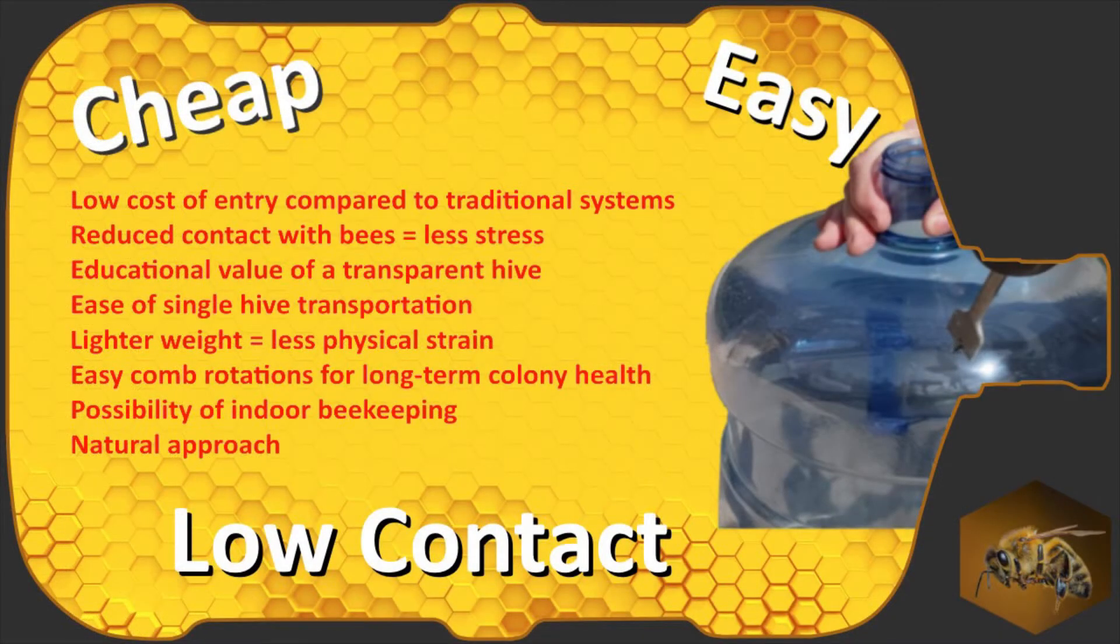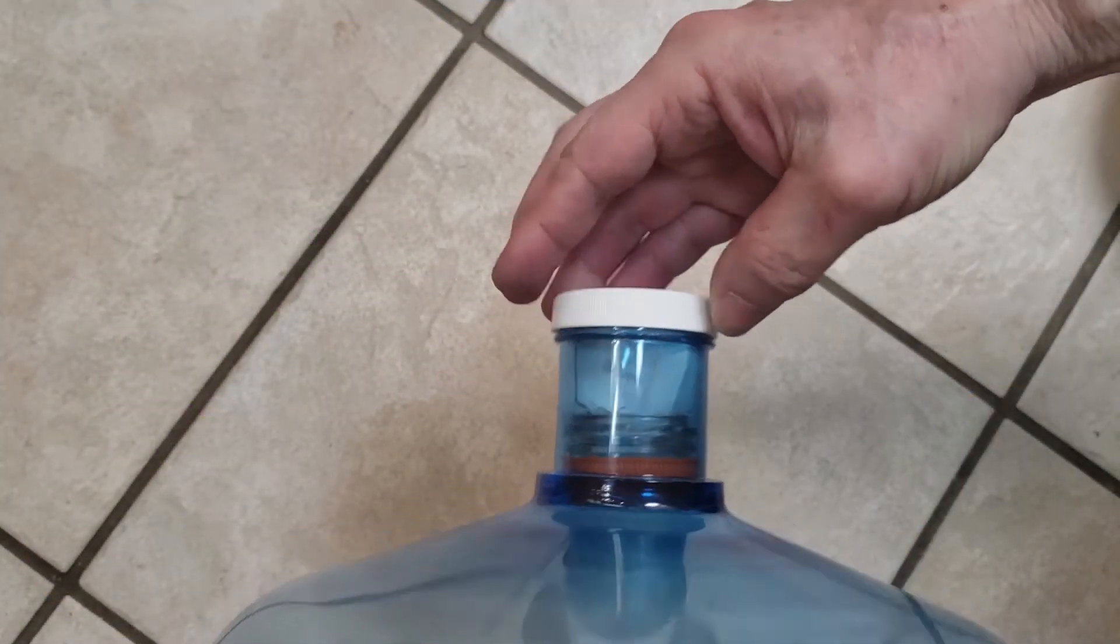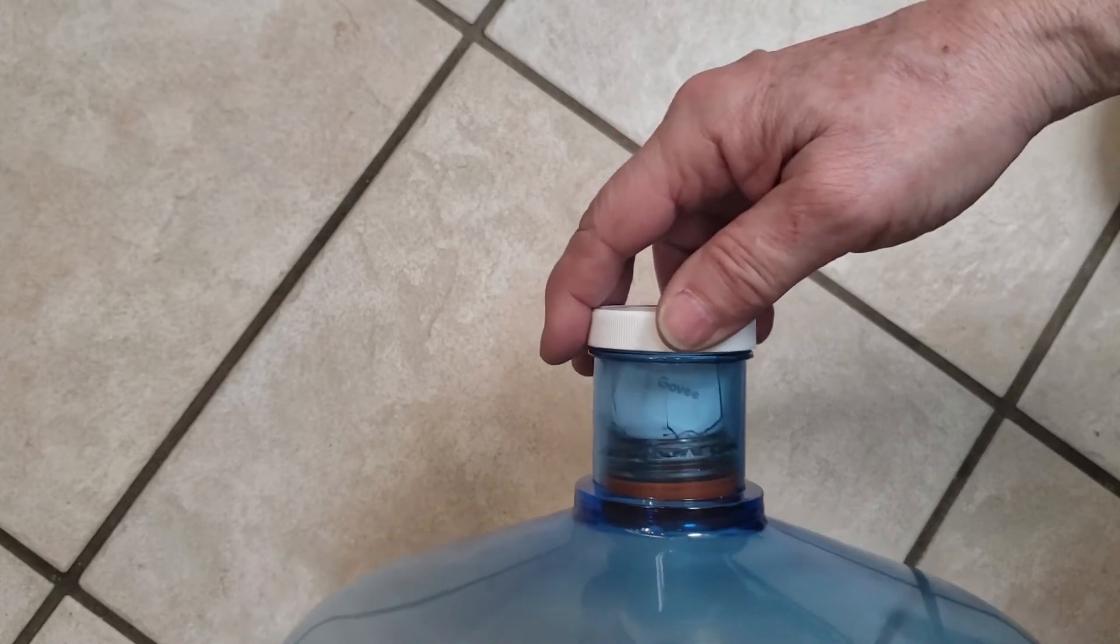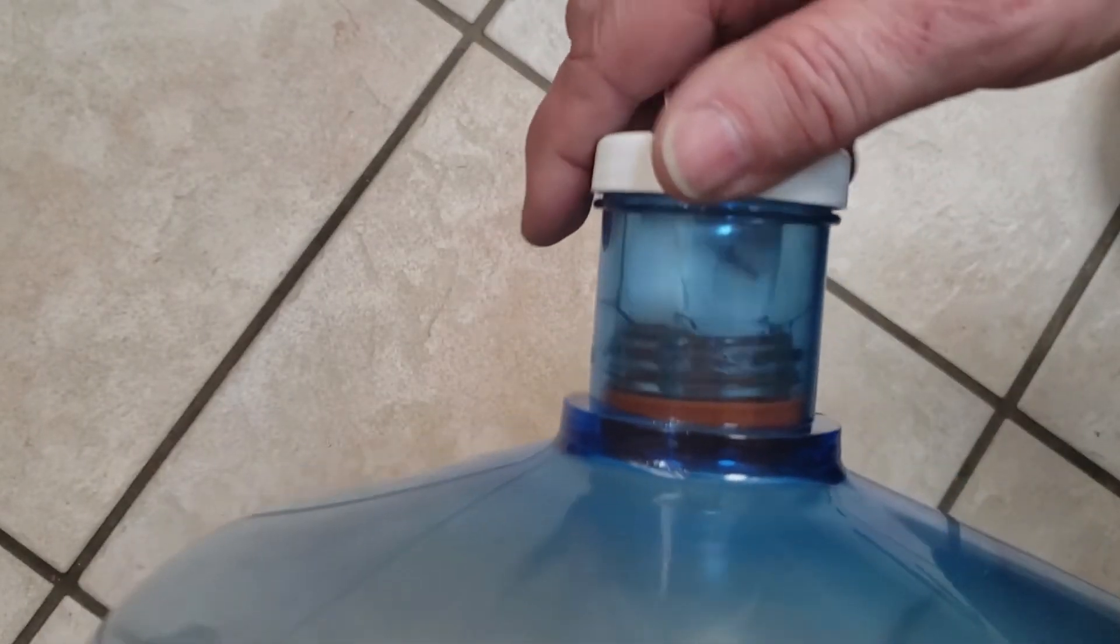For our bottle-to-bottle beekeepers, these units are easy to install. They are the perfect fit for the neck of the top of the bottle of your hive and can be easily removed when adding supers or removing the top bottle from the hive stack with zero contact with the bees inside.